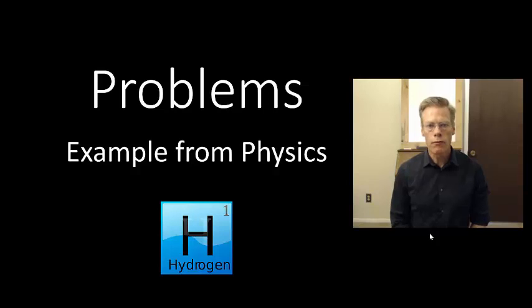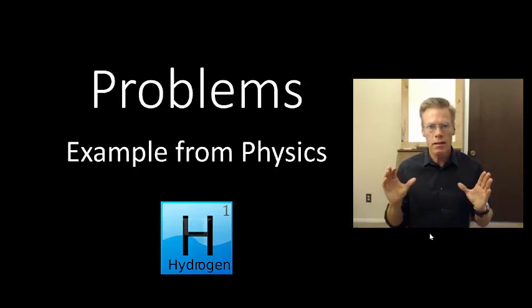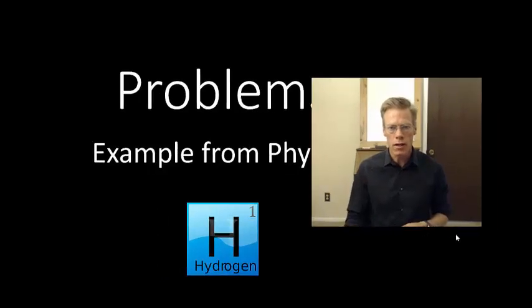Problems. Example from physics. In this video, I'm going to be illustrating how problems in research papers work with a specific example. The example is one from physics. I think it illustrates a point, which is that problems are shaped by the audience of the research paper, not by the writer. And hopefully you'll see how this works as we go on.